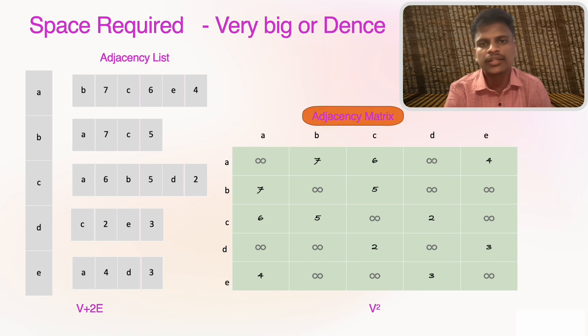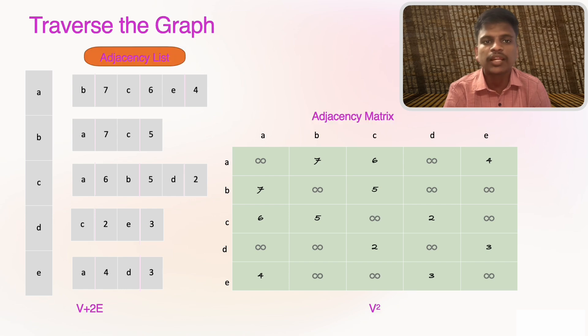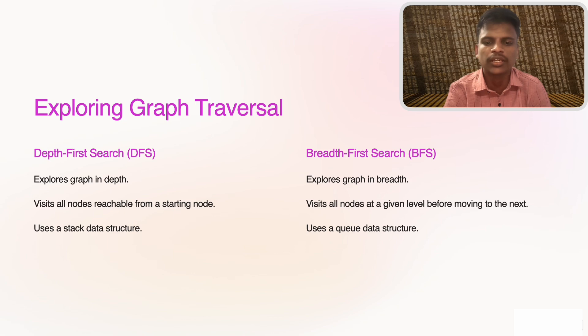For very large or dense graphs, matrix format makes it easier to find if an edge exists. Finding one edge is easy with adjacency matrix, while traversing the full graph is more efficient with adjacency list.